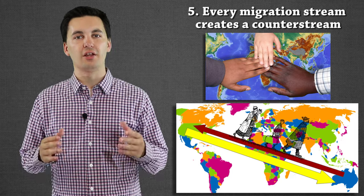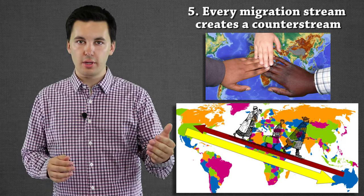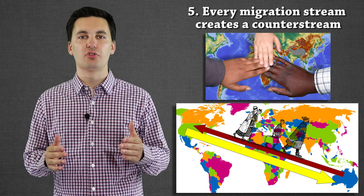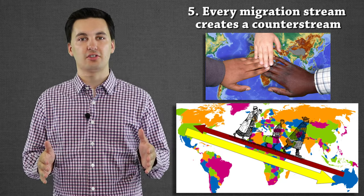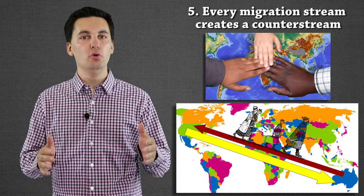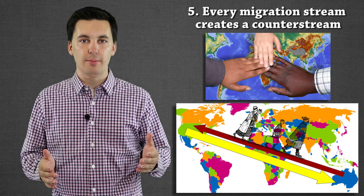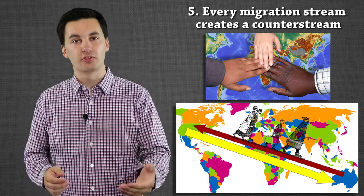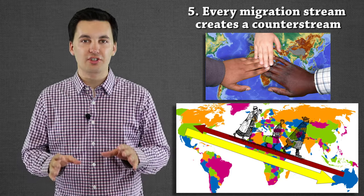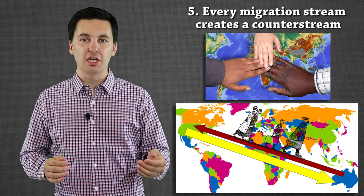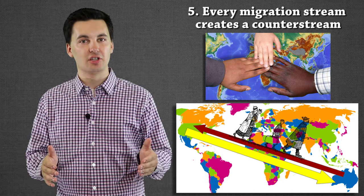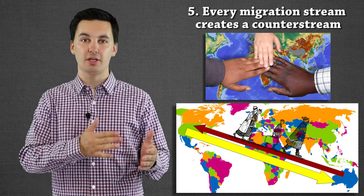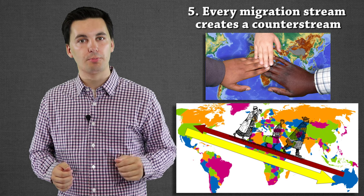The next law is that for every migration flow — every migration stream — there is a counter stream created. When someone moves from place A to place D, they connect the two, and we start to see movement from D back to A as well. If someone migrates to a new place, things will flow back to their origin — whether ideas, goods and services, money, or even more people. Ravenstein does note the streams don't have to have the same volume; he's simply saying there is now a connection between these places and some exchange will occur in return.